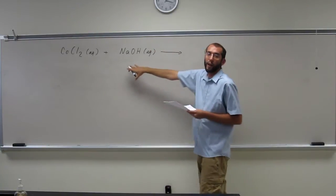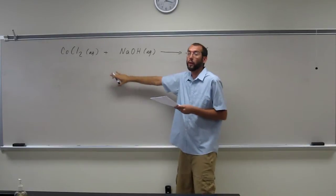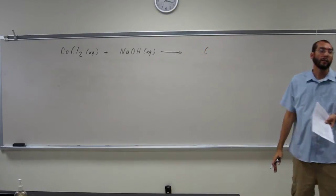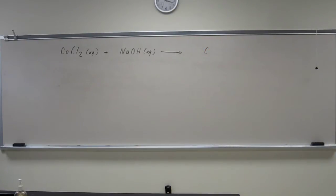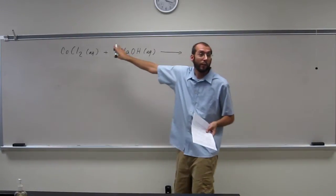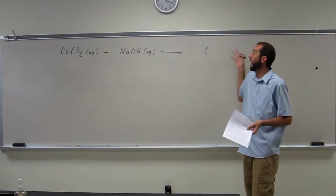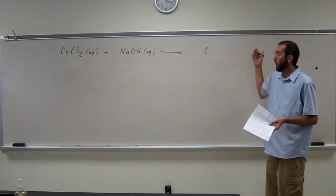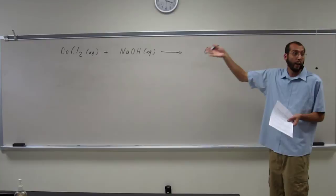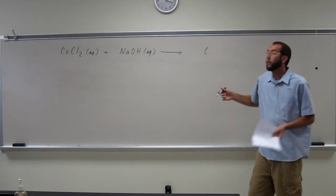So this is where you've got to know what it's going to go to. Does anybody know what the products would be? What kind of reaction is this going to be? Double replacement. Double displacement reaction. So what do they do? They do the dosido, they switch parts, right? So what is going to be the product? Sodium chloride and cobalt hydroxide. Yes.